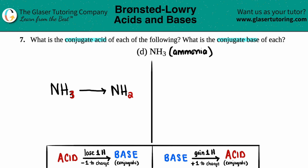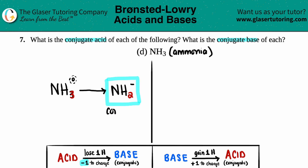Now we just need to make sure we have the right charge. When losing a hydrogen, you subtract one from the total charge. Ammonia had no charge shown, so that means it was zero. Zero minus one gives us negative one, so we put a negative charge here. This is your conjugate base.